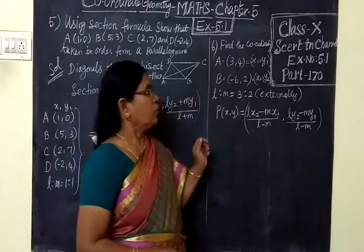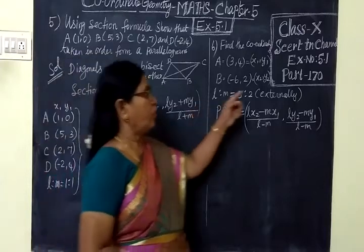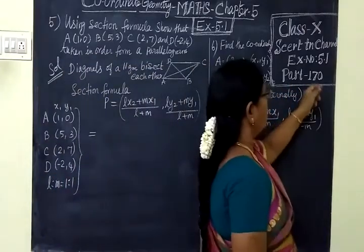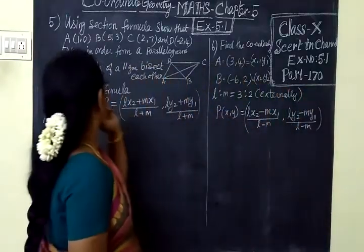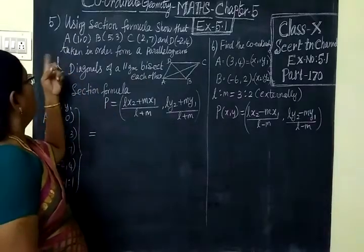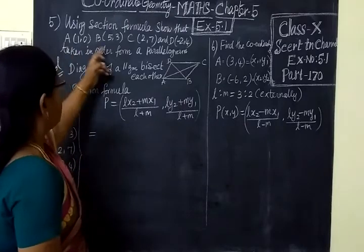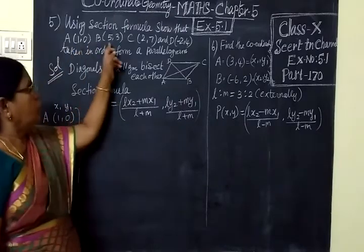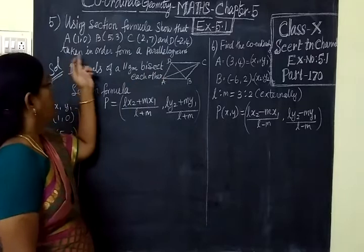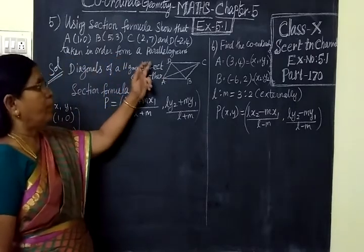Good morning, students. Today we are going to take exercise 5.1, page 170. In the last class, we were seeing questions 1 to 4. Now we are seeing 5 and 6. Using section formula, show that four non-collinear coordinates taken in order form a parallelogram.